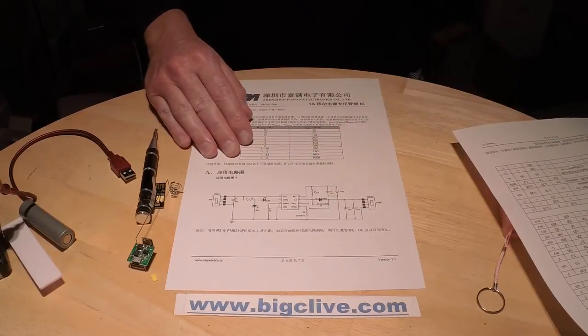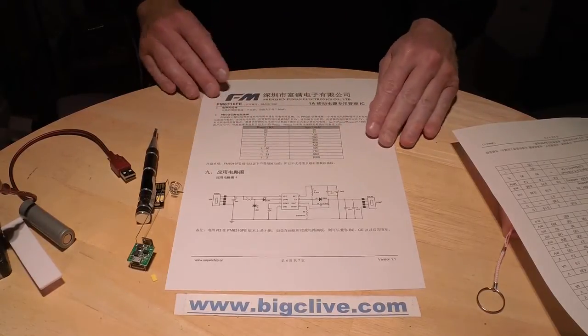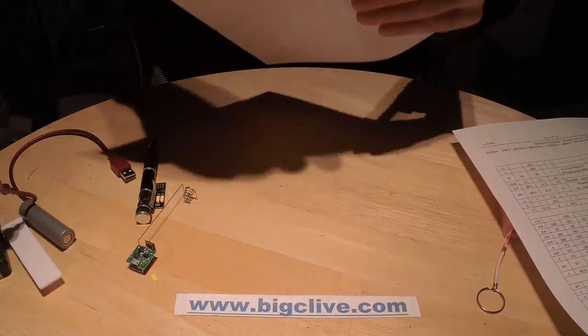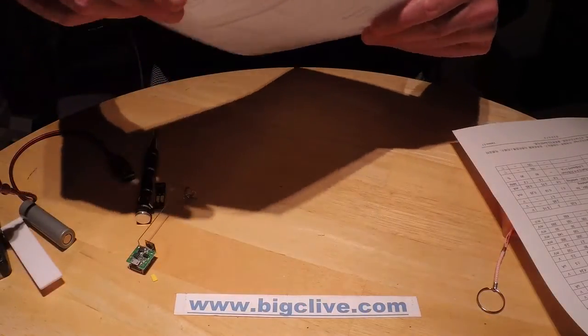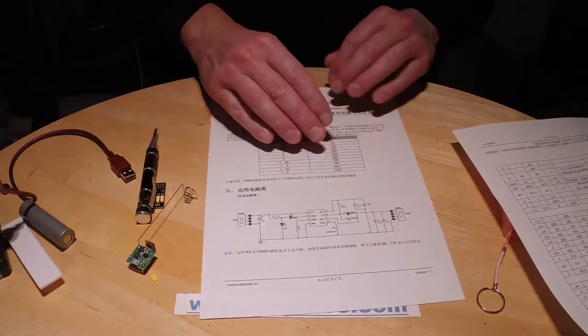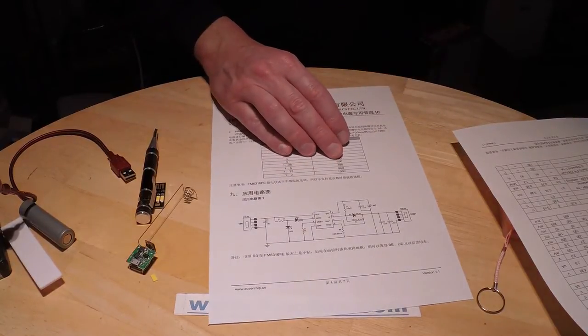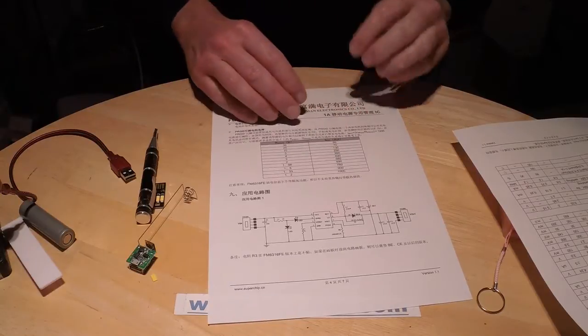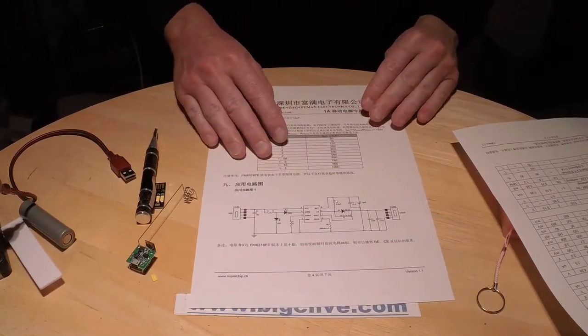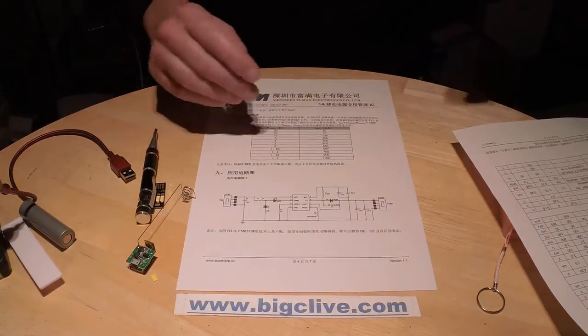And it also regulates that voltage to 5 volts. And also when the battery voltage drops too low, it'll cut the unit off. So it's a one chip solution for these type of things. It's interesting that there's a programming resistor in it that seems to determine the current it'll use to charge the battery.